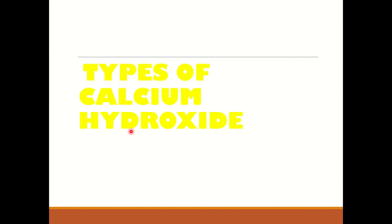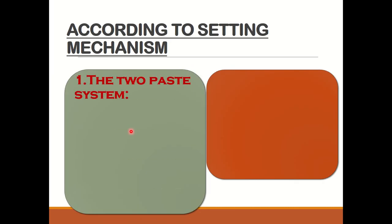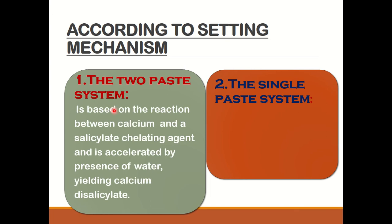Coming on to the types of calcium hydroxide — according to setting mechanism, we have the two paste system and the single paste system. In the two paste system, one paste consists of calcium hydroxide and the other consists of salicylic acid. Salicylic acid is a weak acid that is chemically similar to eugenol and it reacts with calcium hydroxide. This acid-paste reaction yields amorphous calcium disalicylate, and the whole reaction is accelerated by the presence of water. This acid-paste reaction is responsible for the setting mechanism.